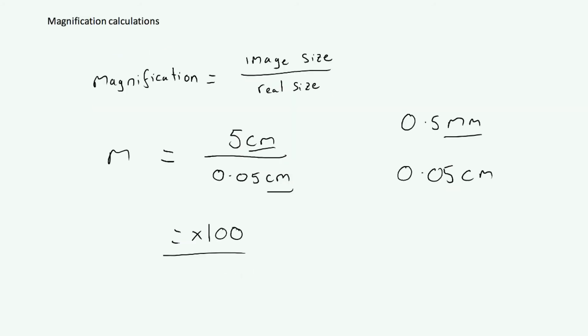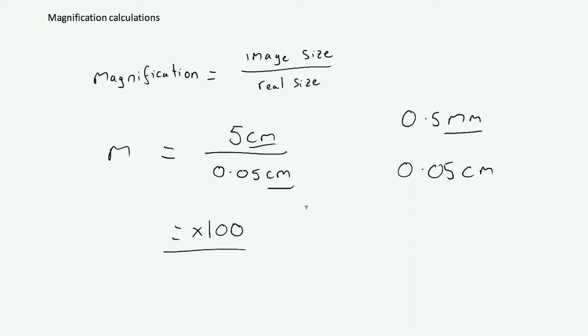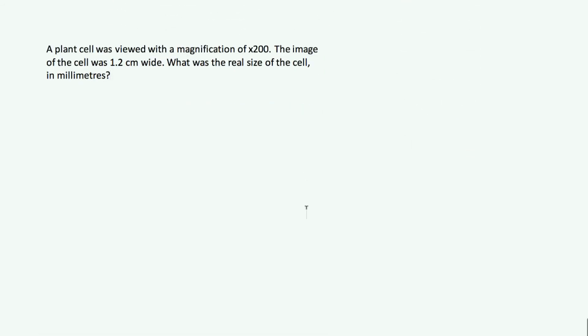We won't always be asked to work out magnification — sometimes we're given the magnification and asked to work out another variable. Here's an example question to try on your own: a plant cell was viewed with a magnification of times 200. The image of the cell was 1.2 centimeters wide. What was the real size of the cell in millimeters? Be very careful about the conflicting units. Pause the video now and try it, then restart because I'm going to go through the solution.